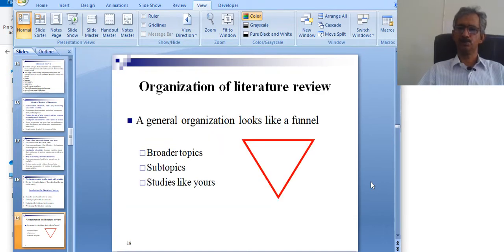Organization of the literature review: a general organization looks like a funnel. We have initially the broader topics, then we develop the sub-topics and then we subsidize.